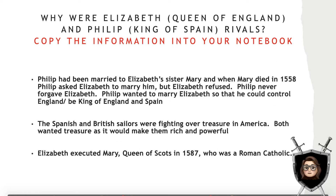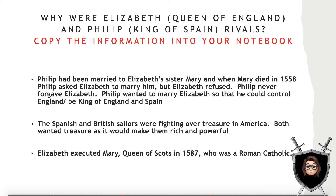You should also copy the following information into your history book: Philip had been married to Elizabeth's sister Mary, and when Mary died in 1558, Philip asked Elizabeth to marry him, but Elizabeth refused. Philip never forgave Elizabeth. Philip wanted to marry Elizabeth so that he could control England and be king of Spain. The Spanish and British sailors were fighting over treasure in America — both wanted treasure as it would make them rich and powerful.